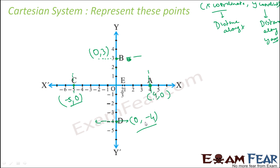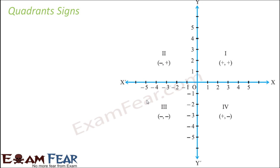Please pause the video and try to plot these points on your own. Once you're confident you can proceed. With practice, just by looking at a point you can say this is 0 comma 3 or minus 5 comma 0. Pause the video and try to plot around 100 to 200 points on your own.